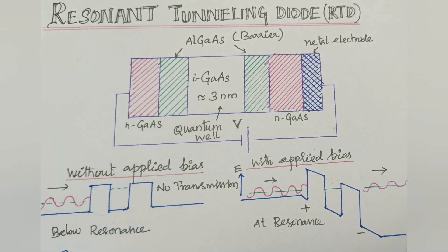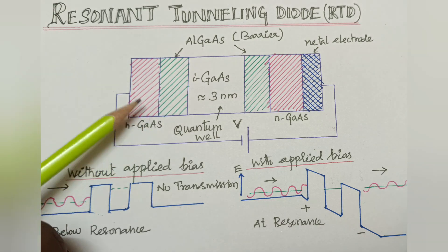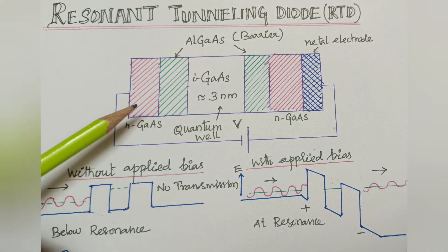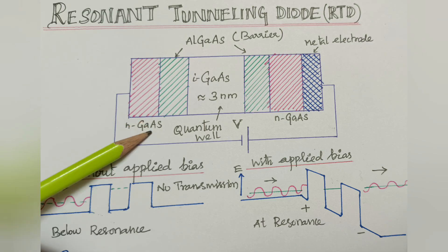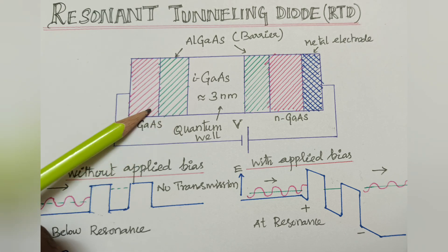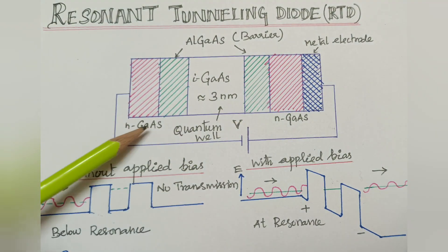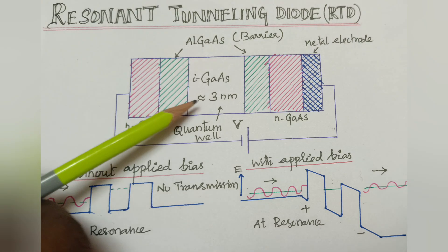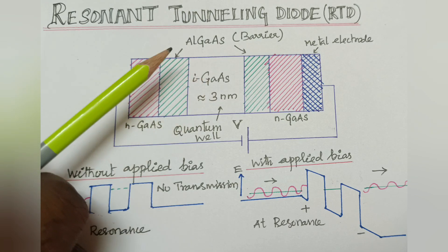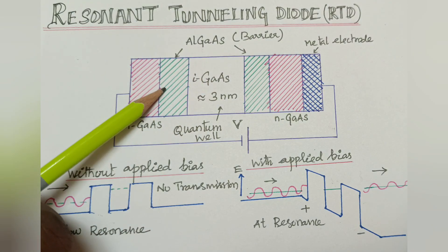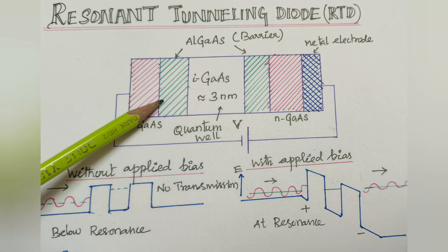Then, structure, that is construction. Here is a Resonance Tunneling Diode, which is made up of GaAs n-type materials. First and fifth layer, GaAs n-type. First and fifth layer made up of Gallium Arsenide n-type materials. The second and fourth layer is made up of Aluminum Gallium Arsenide, which acts as a potential barrier.